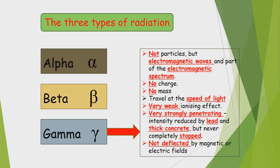Gamma radiation is not a particle but part of the electromagnetic spectrum — along with radio waves, microwaves, infrared, visible light, ultraviolet, and X-rays. It has no charge and no mass. It travels at the speed of light (3 × 10⁸ m/s). It has a very weak ionizing effect but is very strongly penetrating. Its intensity can be reduced by thick concrete but is never completely stopped. Because it has no charge, it cannot be detected by a magnetic field or electric field.